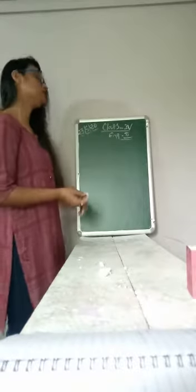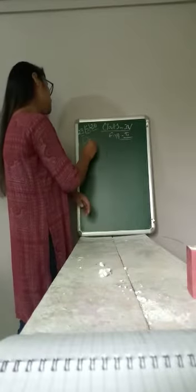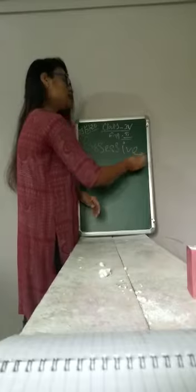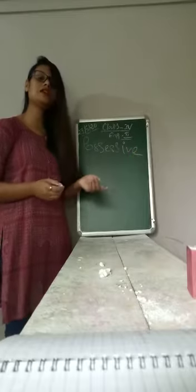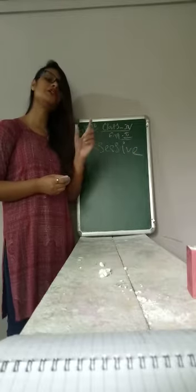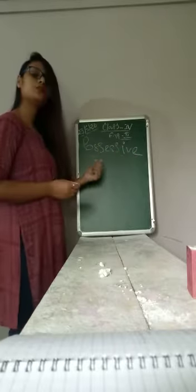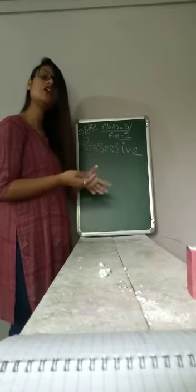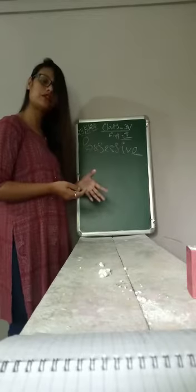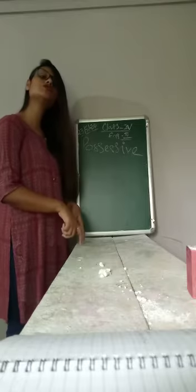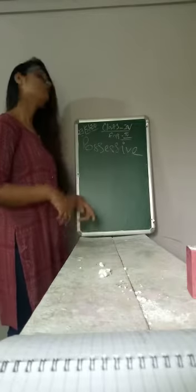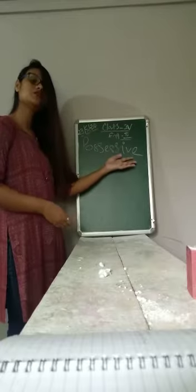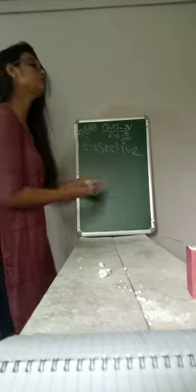Noun — we all know what a noun is. Noun is the name of anything. So, a noun has a possessive form. Possessive means possession — something belongs to someone. That thing belongs to someone, so it's called possession, possessive. Possessive form of noun — how do we do it?